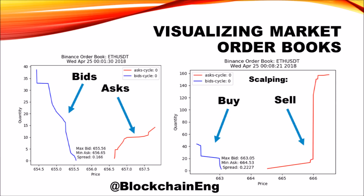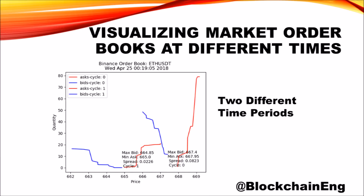On the sell side you can see there's a very large wall — at approximately $666 there's about 160 Ethereum for sale. If we try to price our Ethereum higher than that, there won't be too many buyers. Similarly, we may offer to buy Ethereum for $500 but there won't be many sellers. However, there are a lot of people willing to sell at $663 and people wanting to buy at $664 — that's our spread.